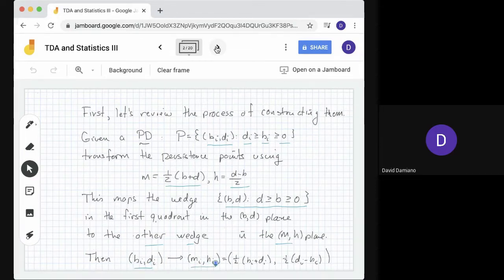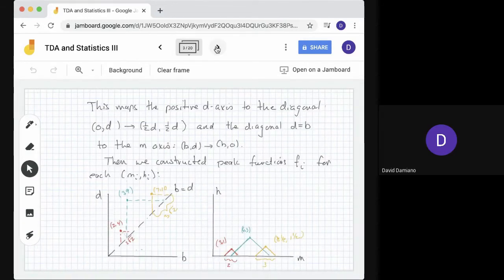For each point (bi, di), we use the same formula and produce points (mi, hi). This maps the positive D-axis to the diagonal in the MH plane, and takes the diagonal D=B to the M-axis. Once we have the transformation and our transformed persistence points, we define peak functions fi for each (mi, hi). Here's the picture from our last Jamboard session showing three persistence points mapped to the MH plane with their peak functions.